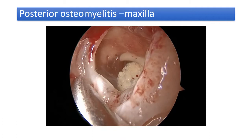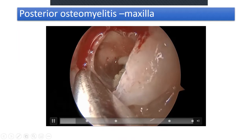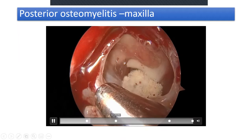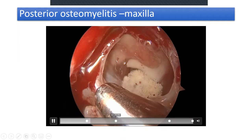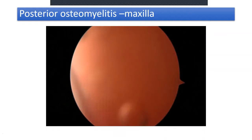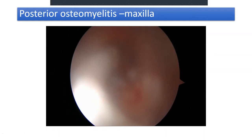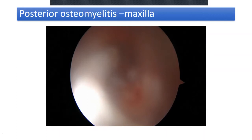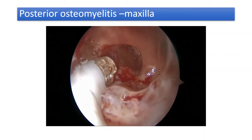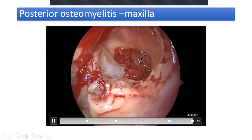The whole thing is inflamed. We use the Hydrodebrider by Medtronic — an excellent tool to flush out whatever is inside, generating much higher pressure than a syringe. Once that is done, we can start using the coblator.